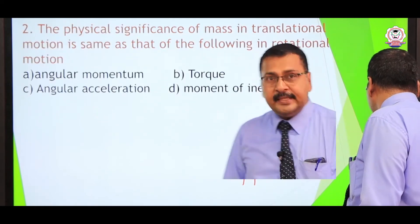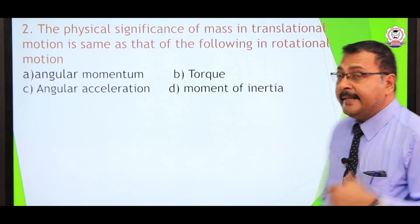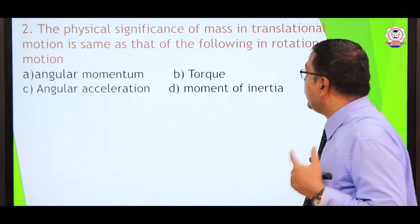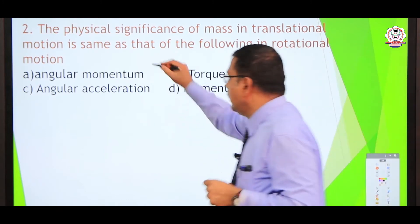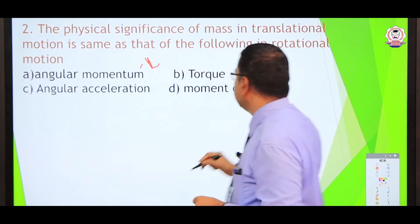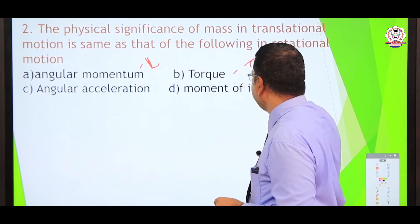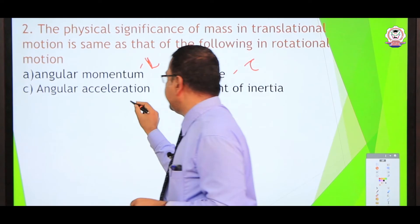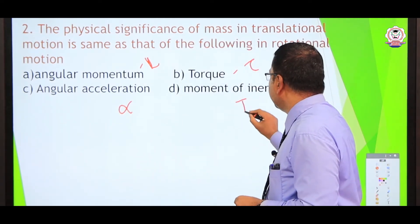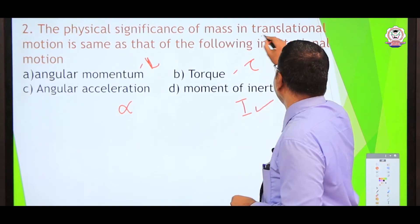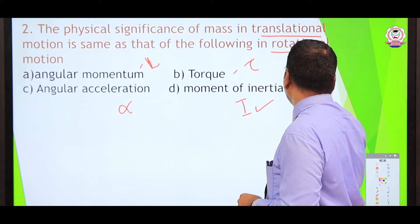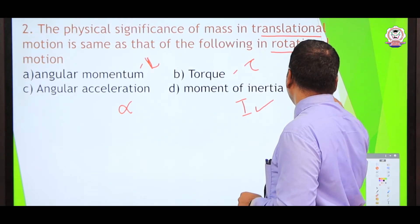Next: the physical significance of mass in translational (linear) motion is the same as which quantity in rotational motion? Angular momentum, torque, and angular acceleration do not represent mass. Moment of inertia represents mass in rotational motion — it is measured in kilogram meter squared.